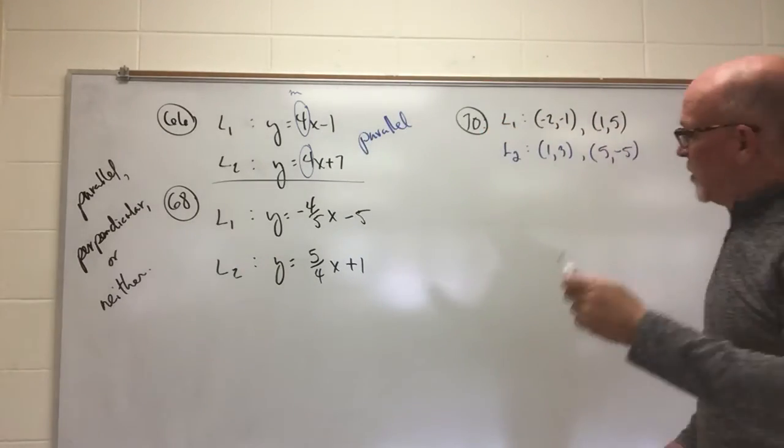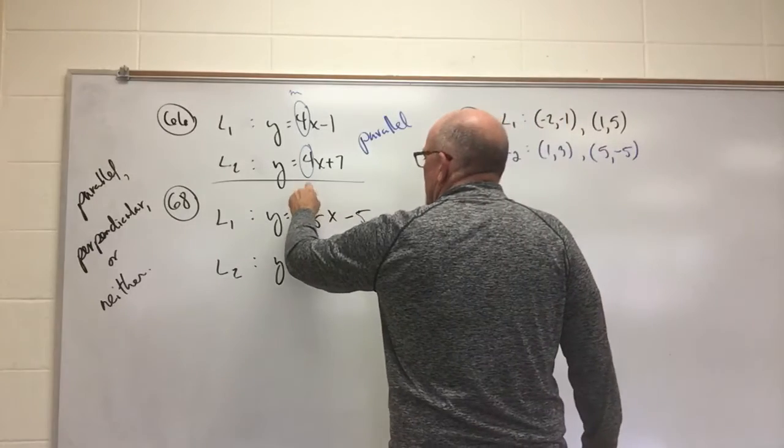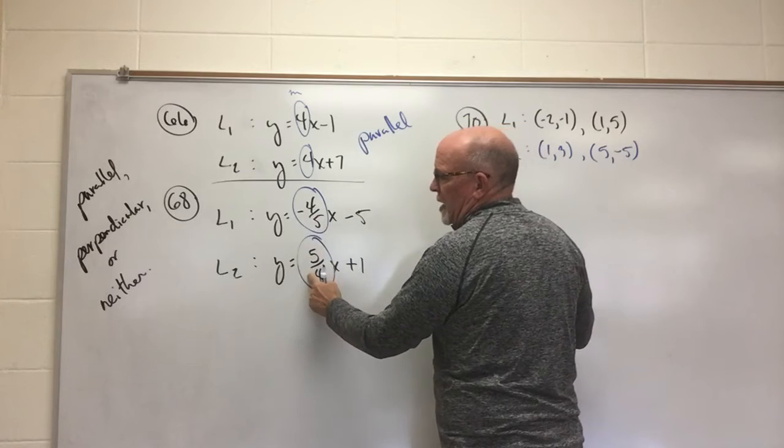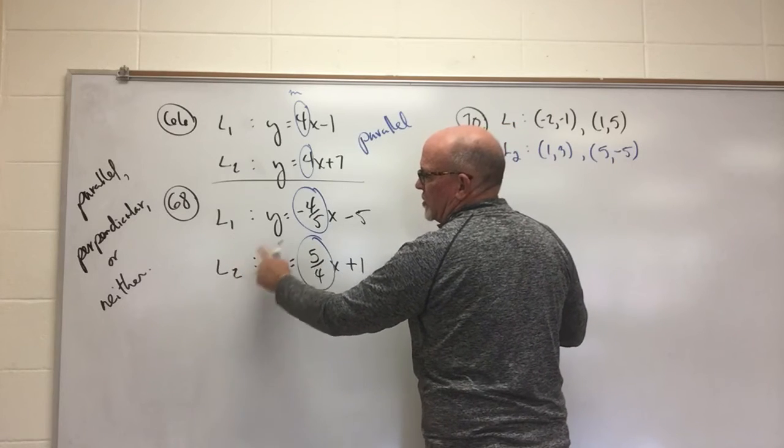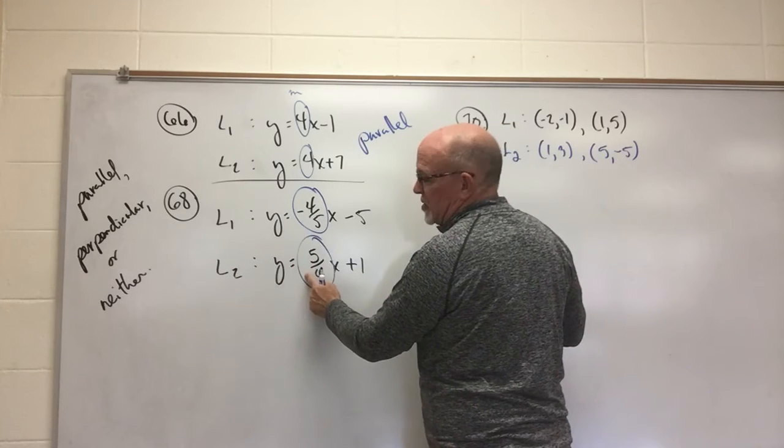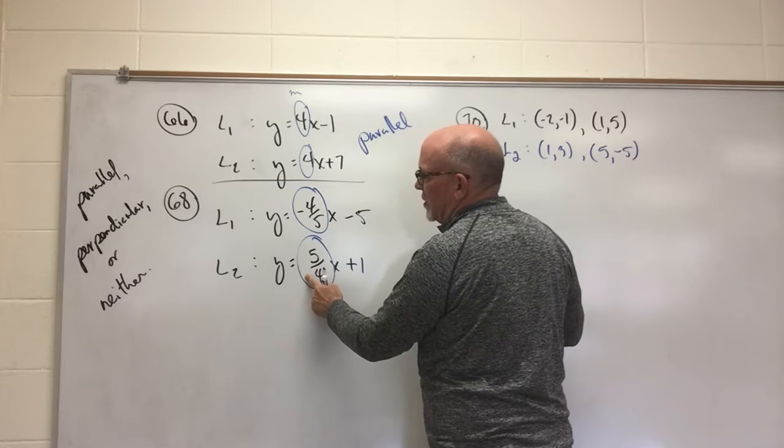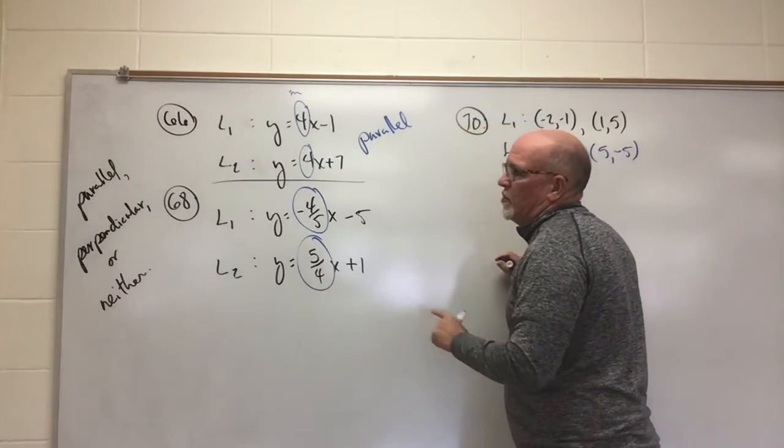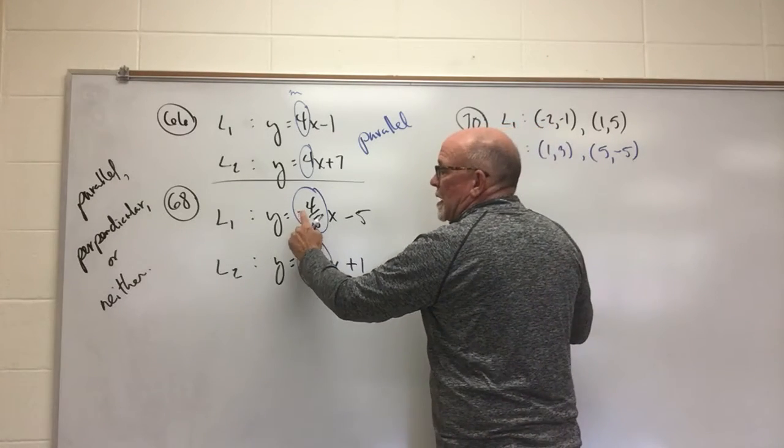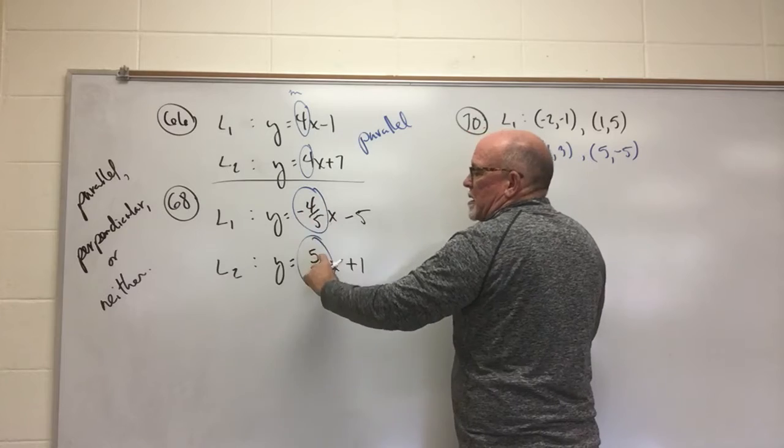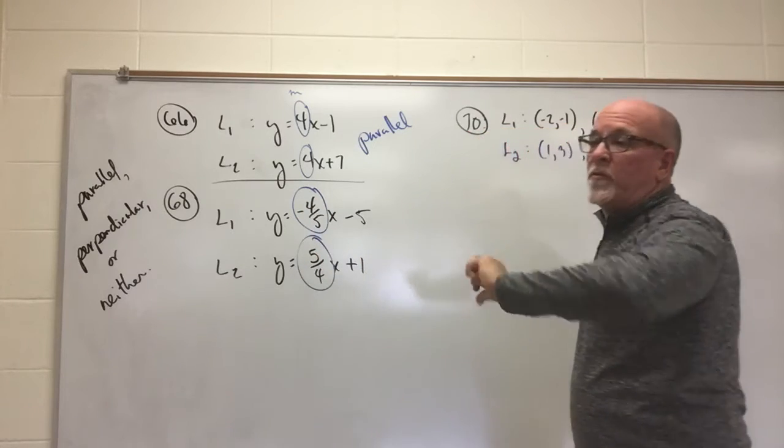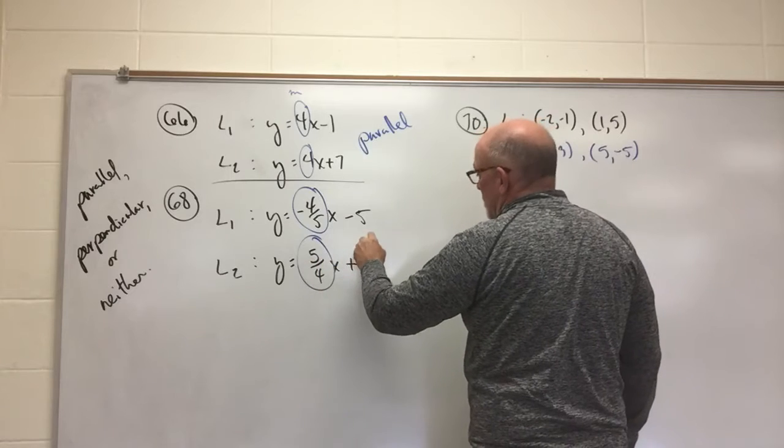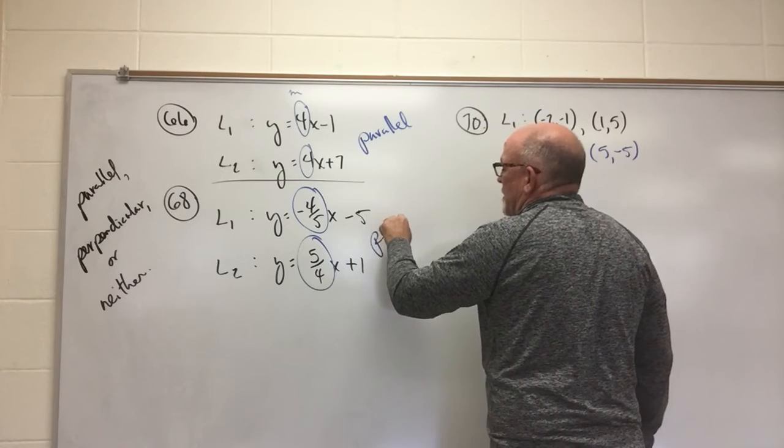Number 68. We're going to examine the slopes again. This is a negative 4 fifths. And then note, the sign has changed between line 1 and line 2. One is negative and one is positive. That's a good sign that they're going to be perpendicular. The other portion that you need for them to be perpendicular is, not only do the signs have to be different, but the ratios have to be flipped. And so this is 4 fifths, this is 5 fourths, therefore these two lines are said to be perpendicular.